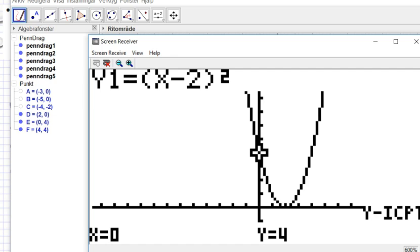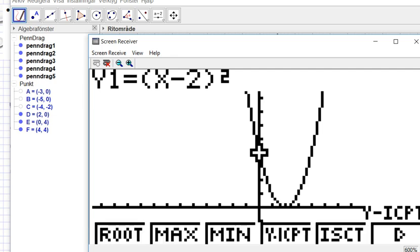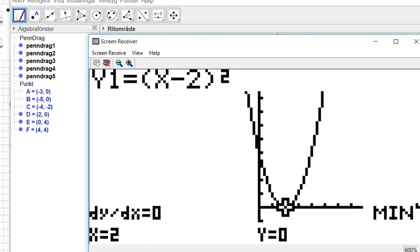And then if you want to see the vertex, G-Solve again. Then you will see the minimum there as an alternative, F3. Then you will get this: 2 and 0.